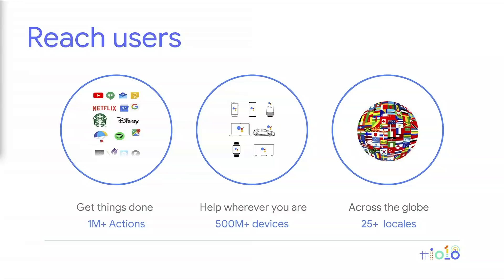Users are already coming to the Assistant to perform over 1 million actions. And they're performing these actions across a huge range of devices and contexts — from voice-enabled speakers like the Google Home, to phones, to Android Auto, to TVs, Chromebooks, and more — bringing the number of devices where you can reach users to over 500 million.